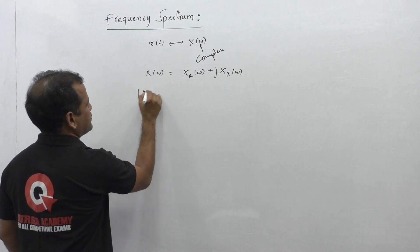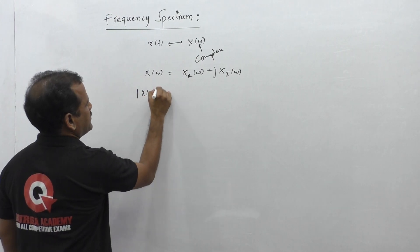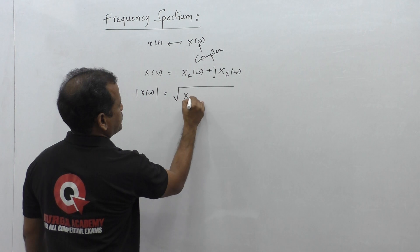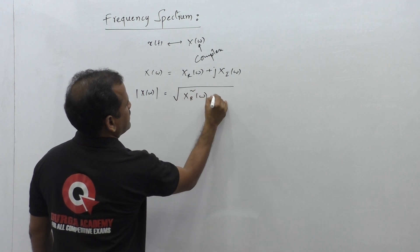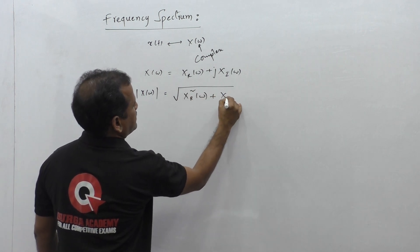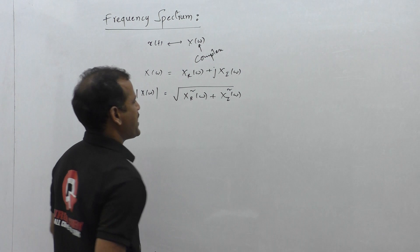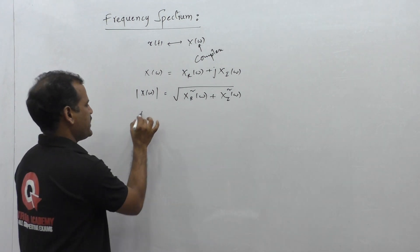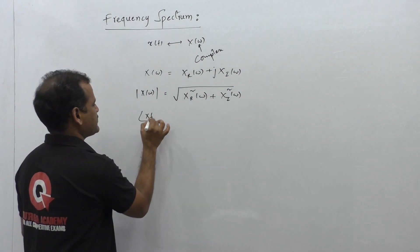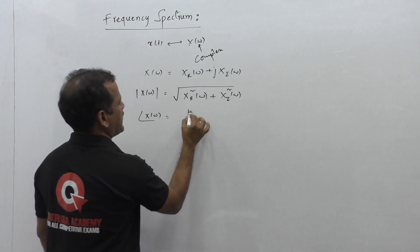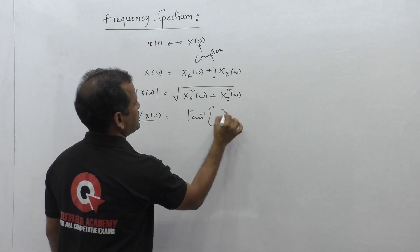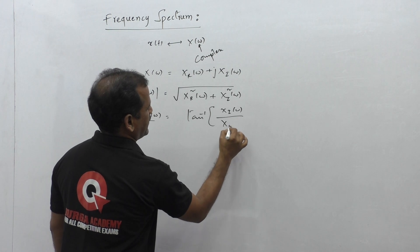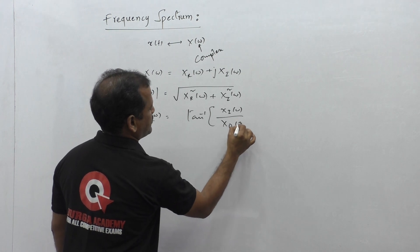Let us take the magnitude of X of omega. It is given by the formula: square root of the real part squared plus the imaginary part squared. This is the magnitude of the complex quantity. The phase of this complex number is tan inverse of the imaginary part divided by the real part of X of omega.